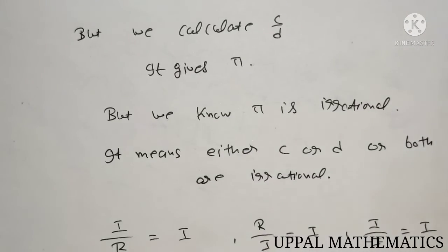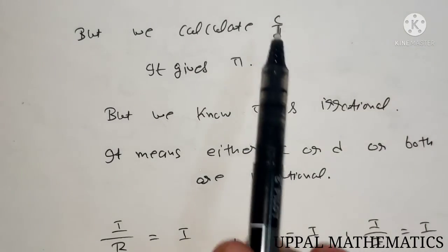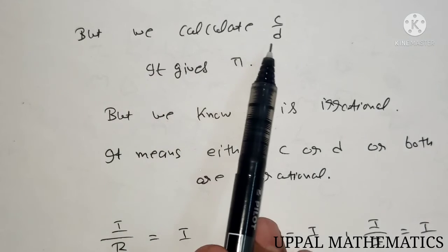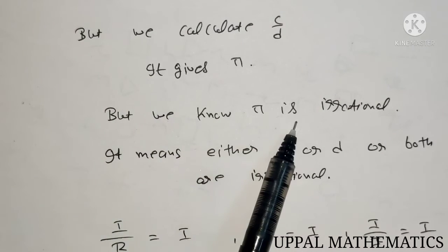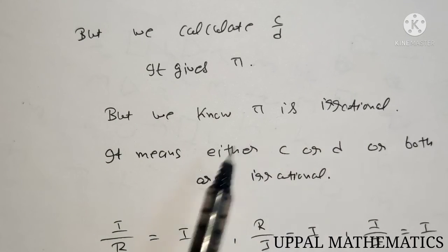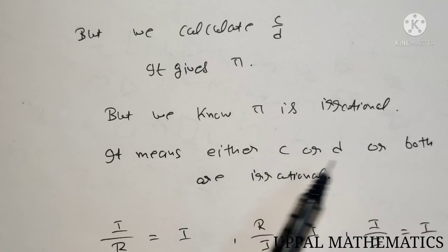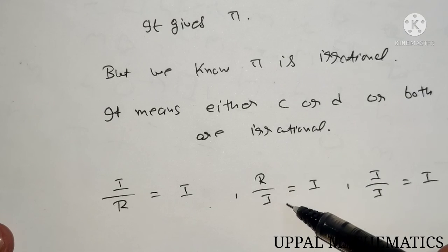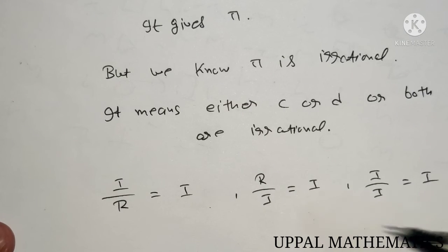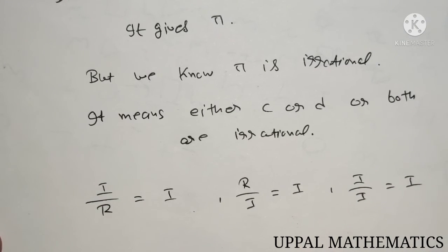Pi is equal to C divided by D. C and D appear to be rational numbers, but when we calculate C divided by D, it gives pi. But we know that pi is irrational. It means C or D or both are irrational. Why? Because irrational divided by rational is irrational, rational divided by irrational is irrational, and irrational divided by irrational is irrational.